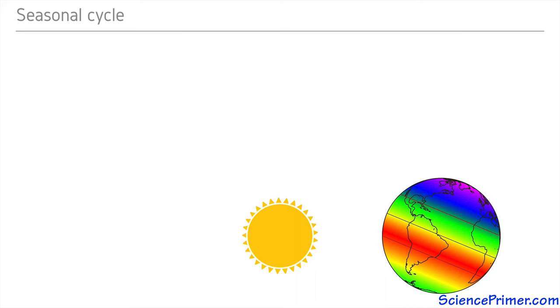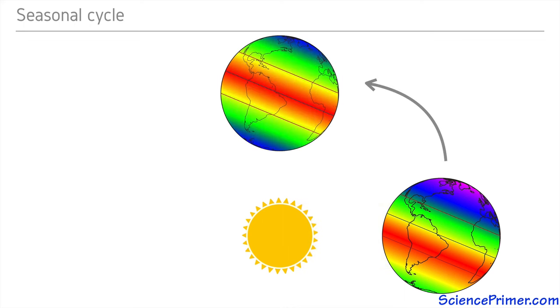During the northern hemisphere's winter solstice, the orientation puts 23 degrees south latitude closest to the sun. As the Earth proceeds along its orbit, the latitude of the closest point to the sun decreases until it hits the equator during the northern hemisphere's spring equinox.